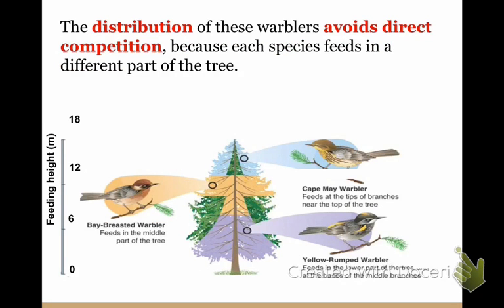The distribution of these warblers avoids direct competition because they are in different areas of the tree — each species feeds in a different part, so they're not bothered by the other warblers. It's kind of like if the school only had one lunch cart — that would be the longest line ever, and the weaklings would die.